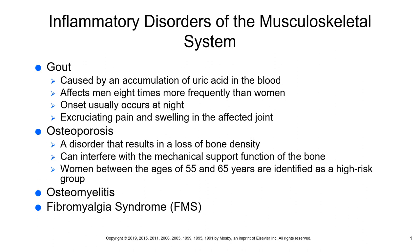Your body produces uric acid when it breaks down purines, and the liver has that role. Gout affects men more frequently than women. Typically the big toes are involved in 75% of cases. Other joints — feet, fingers, wrists — can be involved as well.